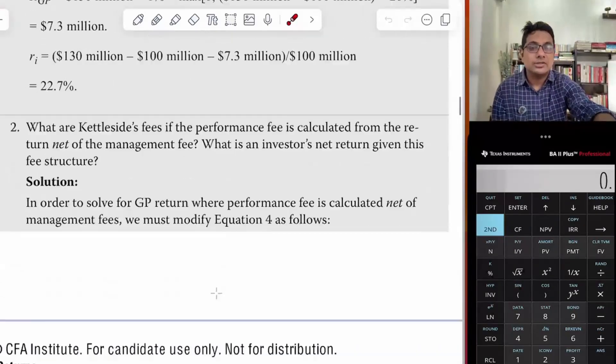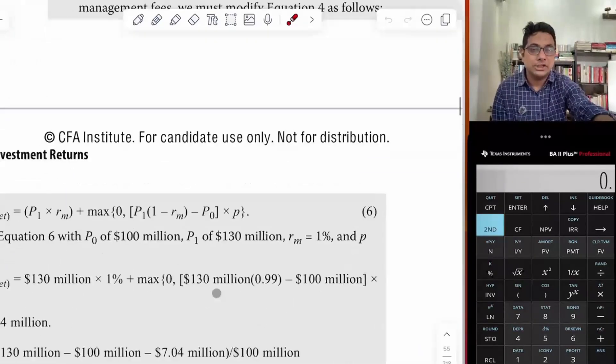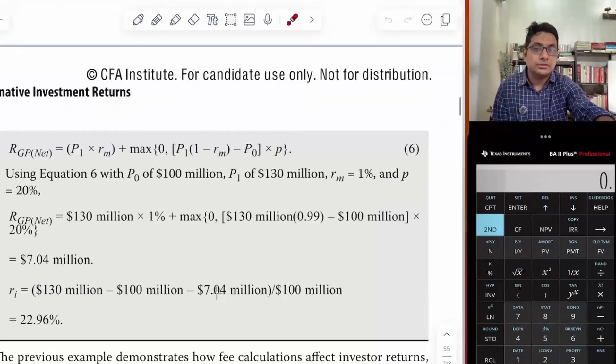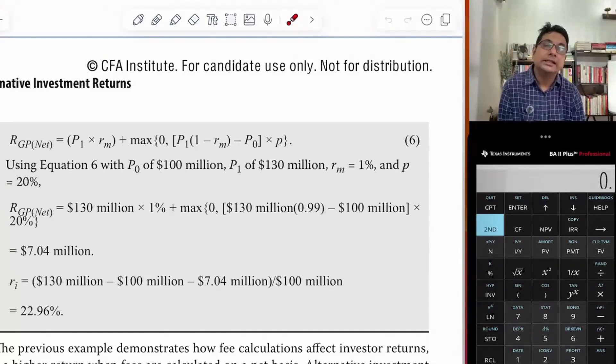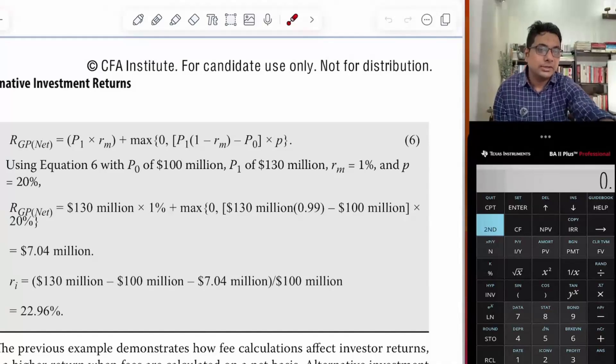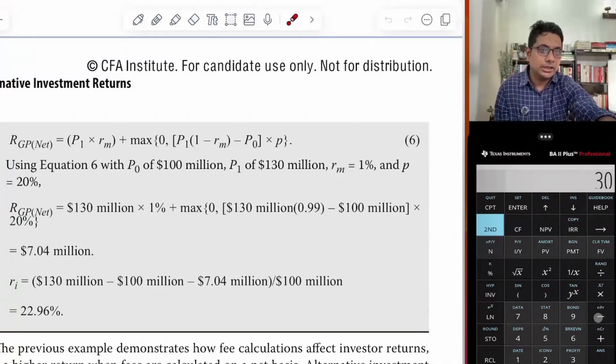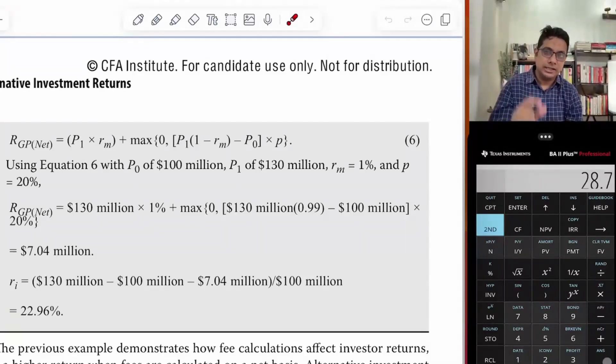The management fee is 1.3. The return is 30. So ultimately, 30 minus 1.3 management fee gives us a net return of 28.7.